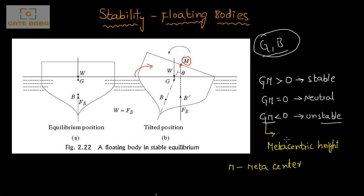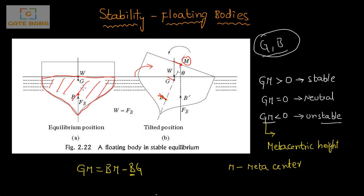Our next aim is to find the metacentric height GM to check whether it is less than 0, equal to 0, or greater than 0. GM is given by BM minus BG — from point B to point M is BM, and from that total distance we subtract BG to get GM. Here B is the initial centroid of the displaced volume — that is, the centroid of the volume of fluid displaced by the body.